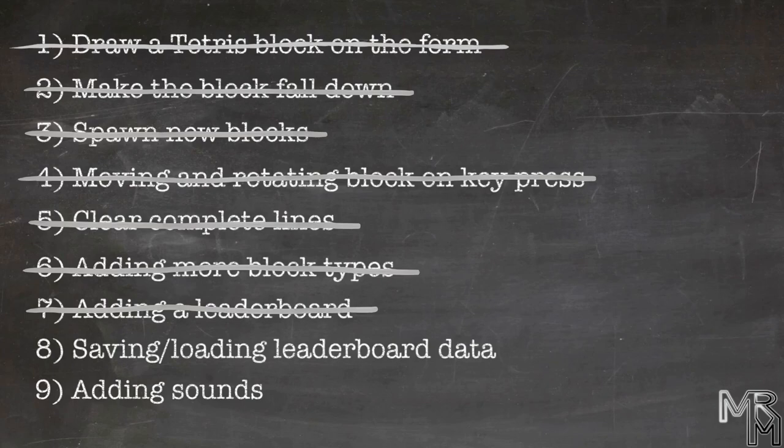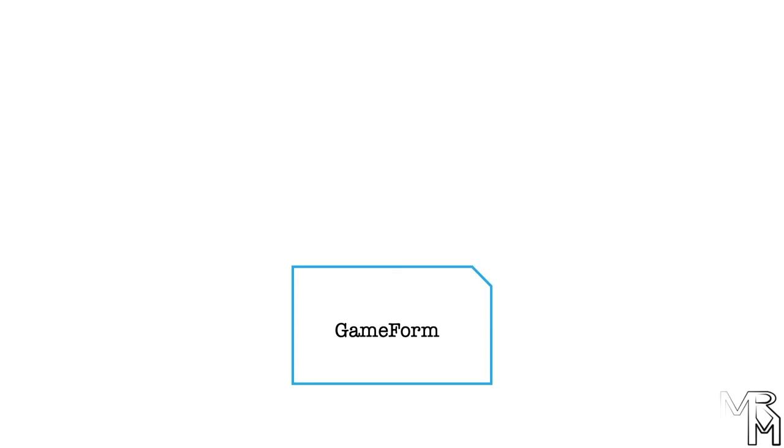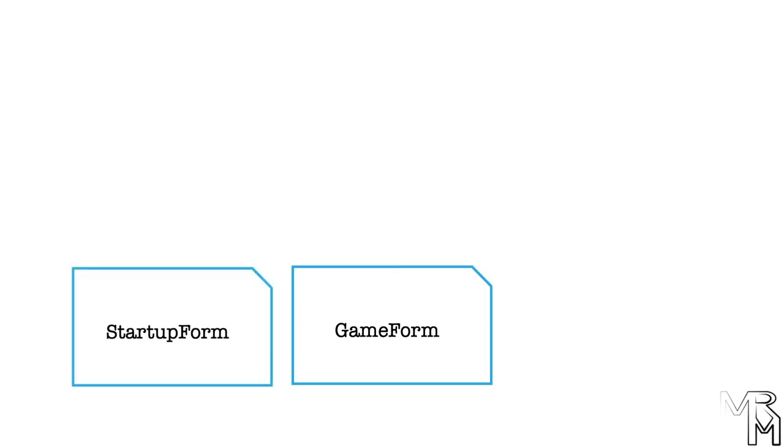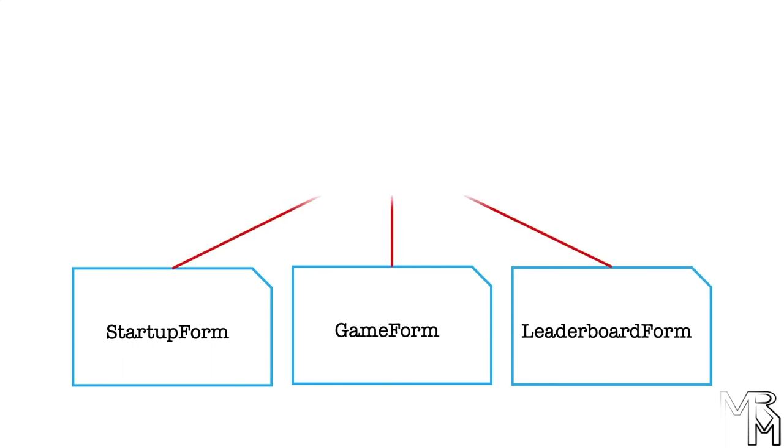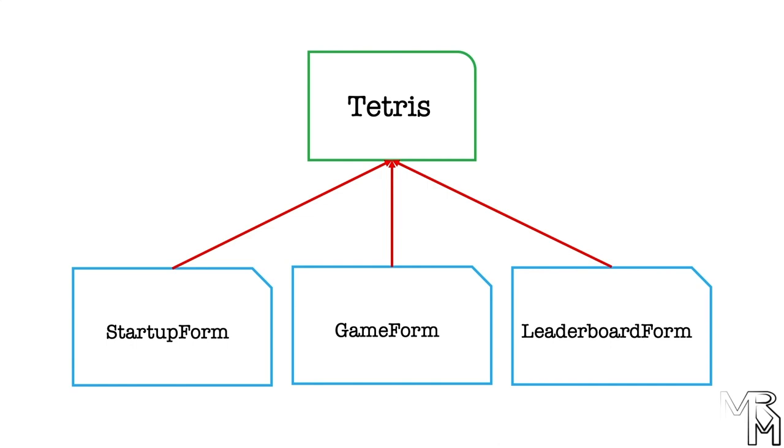Alright, let's now summarize what we did in this video. We added two more forms to our game — a startup and a leaderboard form. We also wired all the forms in a single multi-form project and made the Tetris class serve as a form manager. In addition, we added a leaderboard that displays player names and scores in a JTable. As usual, there are some issues which we're going to fix in the next video, and this is it for this one. Hope it wasn't too hard to follow — looking forward to seeing you in the next video. Bye-bye!